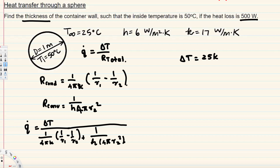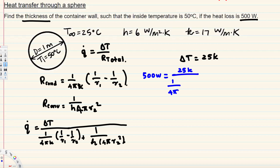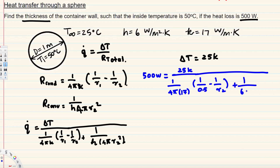Let's plug in all the values. Q-dot is 500 watts, delta T is 25 Kelvin, k is 70, r1 is 0.5, r2 is unknown, heat transfer coefficient h is 6, and surface area uses 4πr2².